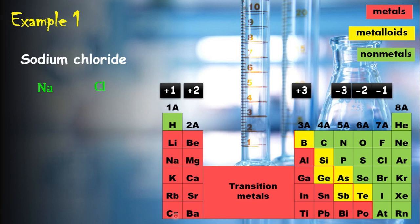As you can see in the periodic table, sodium is in group one. The ionic charge of every element in group one is plus one because its outermost shell electron configuration is one, so group one elements tend to lose this valence electron and obtain the stable electron configuration. Therefore the ionic charge of sodium is plus one.